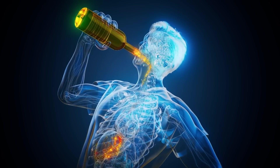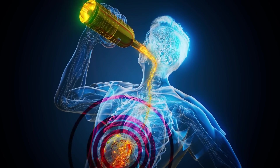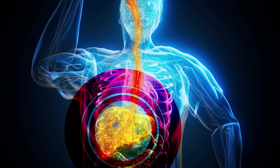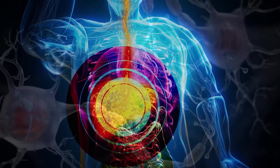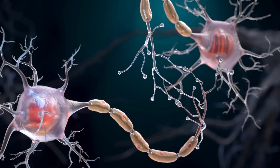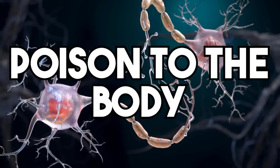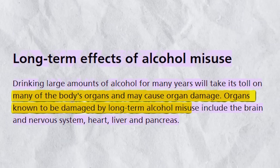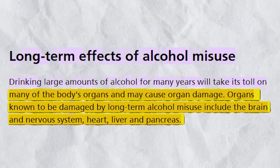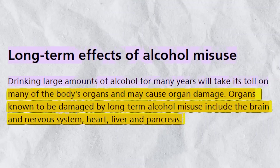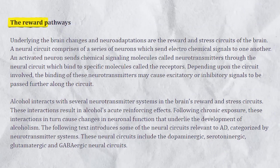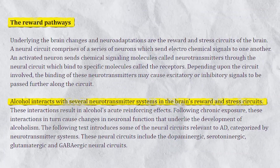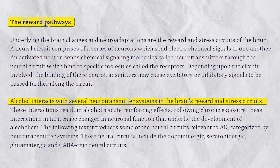Chronic alcohol consumption can have serious long-term effects, as ethanol, the chemical of alcohol, is ultimately a poison to the body. It can cause liver damage, cardiovascular problems, and brain damage, and can ultimately lead to addiction in many individuals, based on its relationship with dopamine and the brain's reward center.